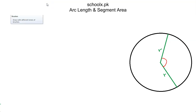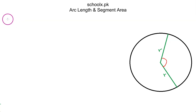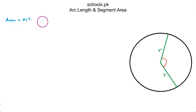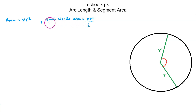We have already studied in our A-levels that the area of a complete circle is πr², the area of a half circle is πr²/2. The semi-circle area is πr²/2, which is exactly half of a circle. A semi-circle is half a circle.